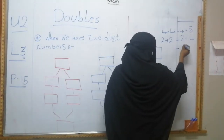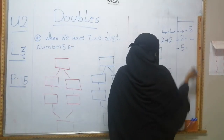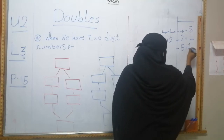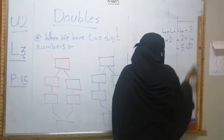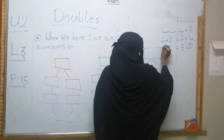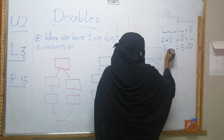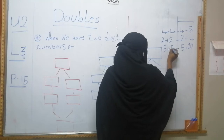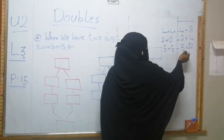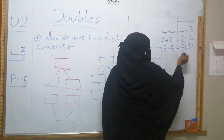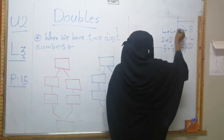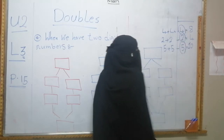Double five. Double five equals ten. That means five plus five. Those are one-digit numbers.